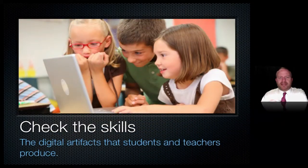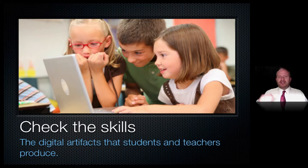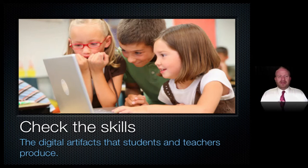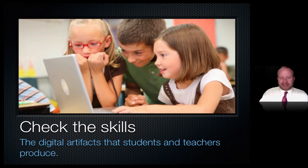The C part of the KTEC system is check the skills. This is the assessment side of it. You've got to go and look at what the students are producing and know what they have. If they're producing blogs, then you know they've been blogging and working on all those skills. You've got to go look for the artifacts — that's checking the skills — because then you know they've actually embedded them and they're working.